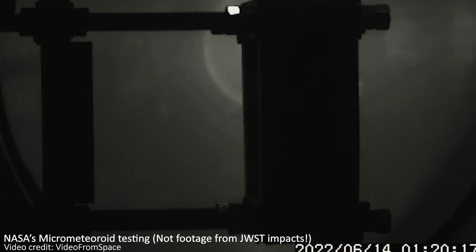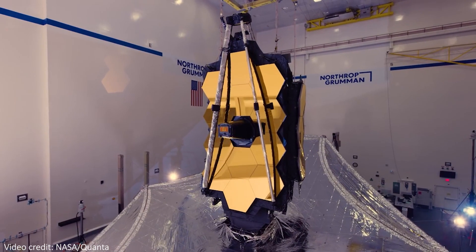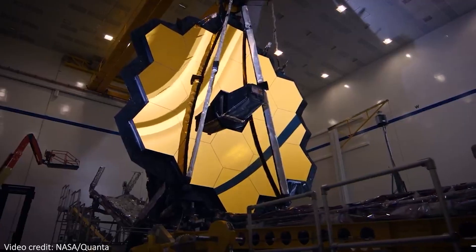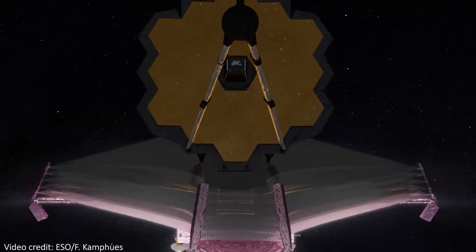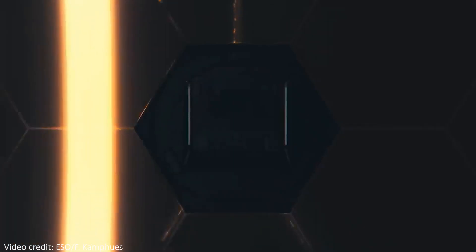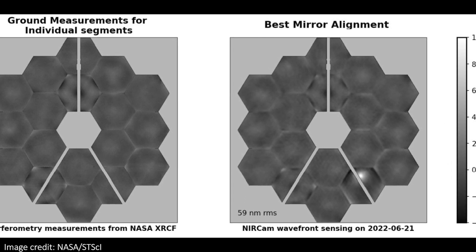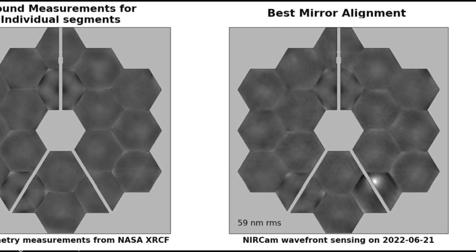These micrometeoroid strikes are expected and unavoidable for space telescopes like JWST, especially since this telescope has such a large and exposed mirror. The telescope was designed to deal with them, despite the fact that inevitably repeated strikes will very slowly degrade the quality of images over the next couple of decades.